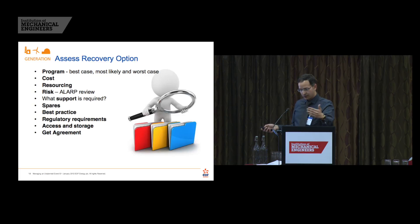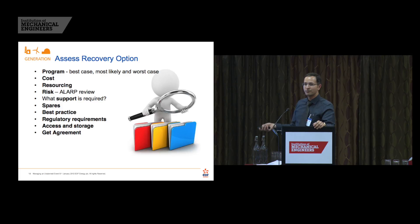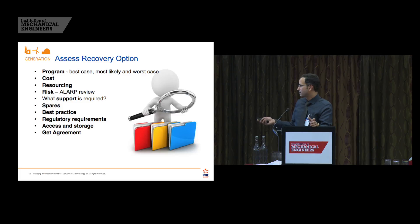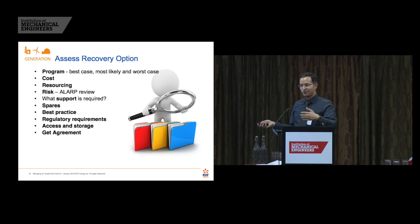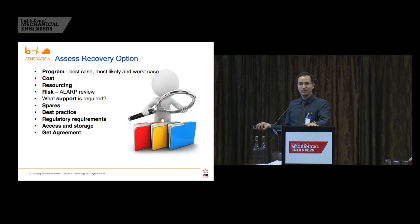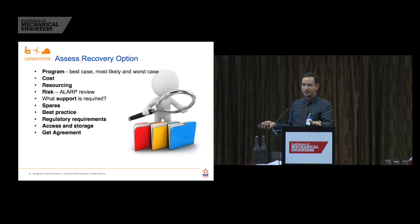Once we have determined the best technical options and decided what we want to do, we start looking at program, cost — pretty much project management. Management moves into the phase of knowing what we want to do and managing it as a project: resourcing, doing a risk review, LR preview, what support is required, identify spares, best practice, regulatory requirements, access and storage, and get agreement. Getting agreement with key stakeholders and senior management is quite important. I found I had to take the technical assessment and convert it into a language that made sure I got the funding I needed, having the programs and scenarios in place to get the best solution through.